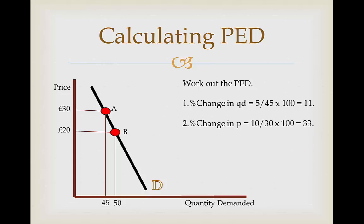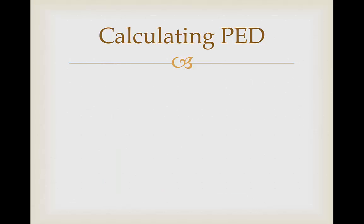Then we do the percentage change in the price, which is 10, the difference between 20 and 30, divided by 30 times 100, which gets us 33. The final step is simply to divide 11 by 33 and this gets us 0.3.